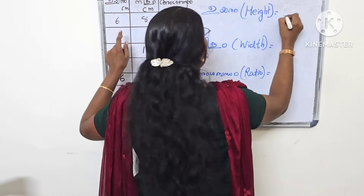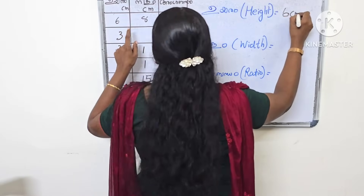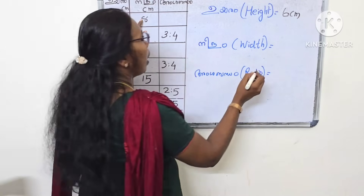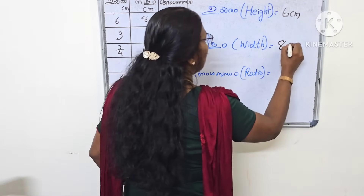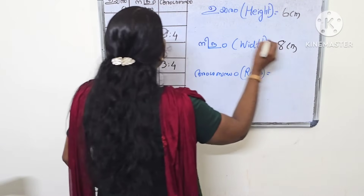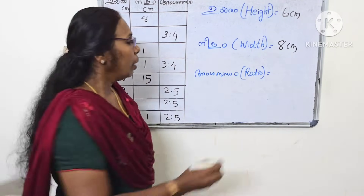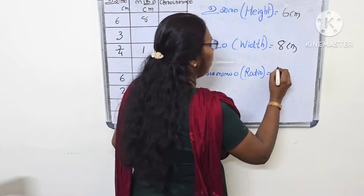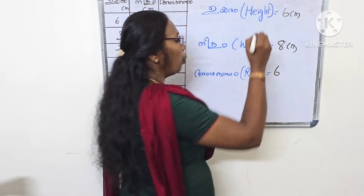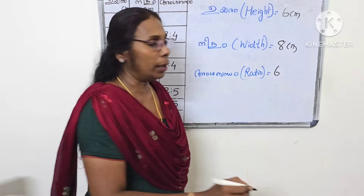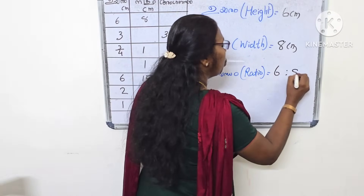One measurement is 6cm — it's the green one. What do you call it? It's 8cm. We'll put in the ratio. Then we get 6 to 8.